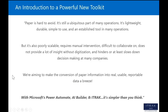So why are we here? Paper is unavoidable — it's a ubiquitous part of many operations. It's lightweight, durable, simple to use, an established tool people know. But it scales poorly, requires a lot of manual handling, it's difficult to collaborate with, and it doesn't provide a lot of insight unless it's being digitized. It hinders or at least slows down decision making for people who deal with a lot of paper.